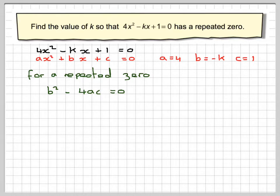Therefore, if b is minus k squared from there, minus 4 times a, which is 4, times c, which is 1, and that's equal to 0. Minus k squared, well, minus k times minus k gives me k squared, minus 4 times 4 is 16, times 1 is still 16, so we've got minus 16 equals 0.